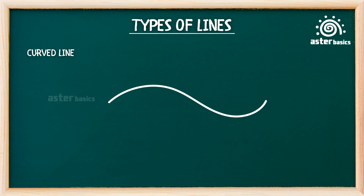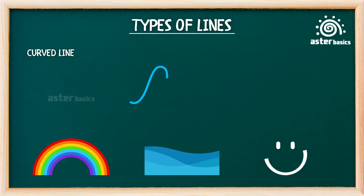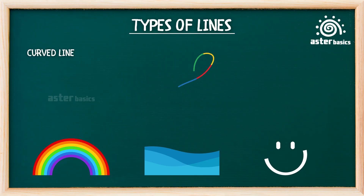Curved line: a line that bends smoothly — no corners or angles. Curved lines are used to draw rainbows, waves, and smiley faces. This line loves to dance and flow. It twirls, loops, and bends like a snake or a rainbow in the sky.